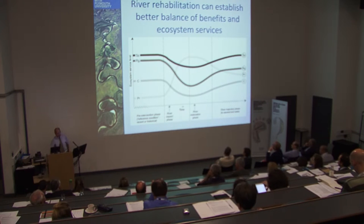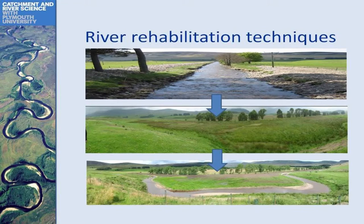So what are these river rehabilitation techniques? Here we've got a very simplified, straightened channel at the top, and to improve fisheries they've re-meandered it. They've created complexity in the landscape — a greater range of hydraulic habitats to support fish.